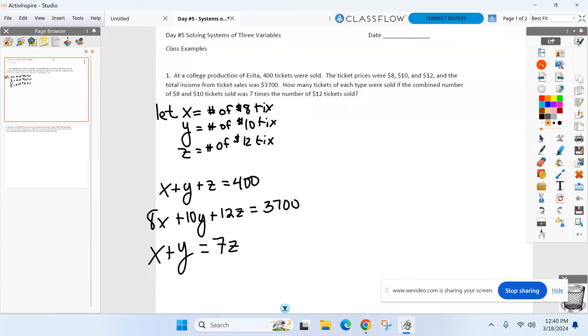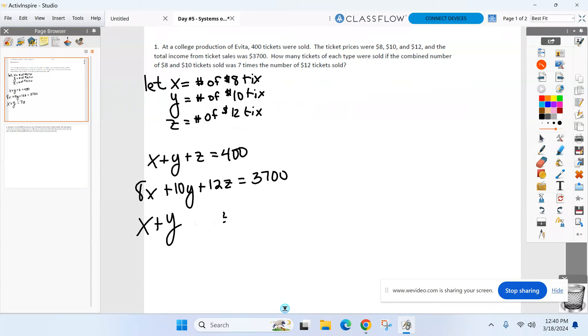Combined number of 8 and 10. What do we call those variables? X and Y. And combined means addition. Add them together, but no money though. We're talking about the total number of tickets. So X plus Y, the combined amount of tickets equals seven times the number of $12 tickets. Seven times Z. Again, no money attached because we're talking about the number of tickets sold, not how much they cost. Quick suggestion: get X, Y, and Z all on the same side. So minus 7Z. You still got to set it equal to something though. Nothing's there, so it's zero.